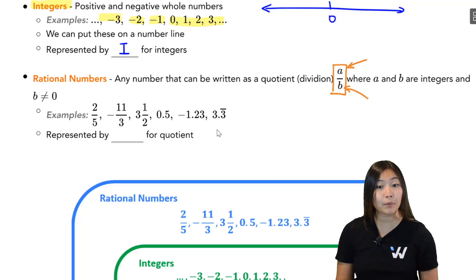So if you can write a number like that, then it's called a rational number. So for example, 2 over 5, that's clearly a rational number because 2 is an integer, 5 is an integer. Negative 11 over 3 is a rational number because 11 is an integer, negative 3 is an integer. 3 and 1 half, this mixed number is a rational number because we can rewrite it. If I rewrite this, this is 7 over 2, which is a rational number.